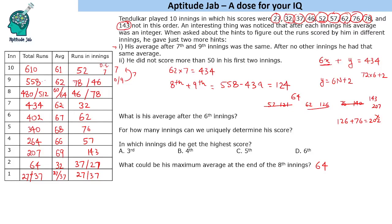The first question asks: what is his average after the 6th innings? That is 67. For how many innings can we uniquely determine his score? Unique scores can be determined for 6 innings (innings 3 through 8 or 9 can be averaged for 8 innings, but the score itself is unique for 6). In which innings did he get the highest score? He got the highest score in the 3rd innings (143). That is the solution to the set. Don't forget to like this video!